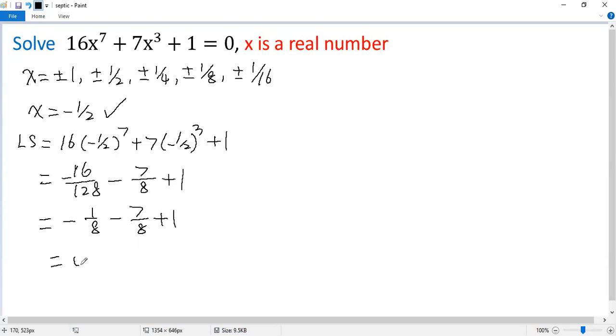That is actually 0, so it is the right side. So x equals negative 1 over 2 is a solution.